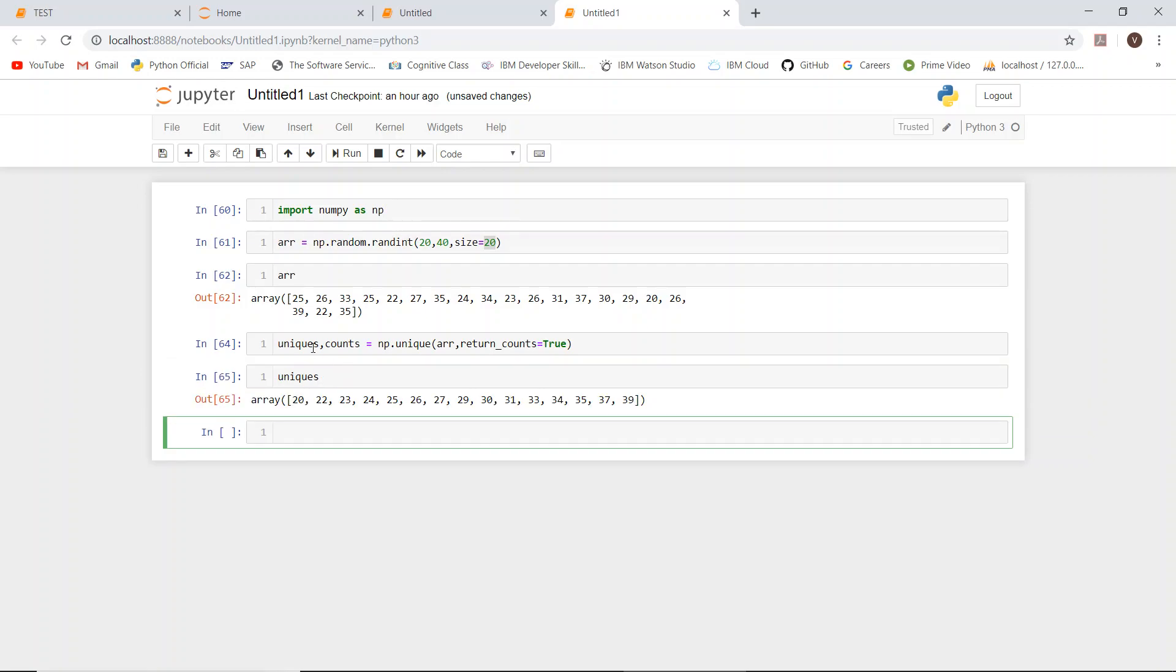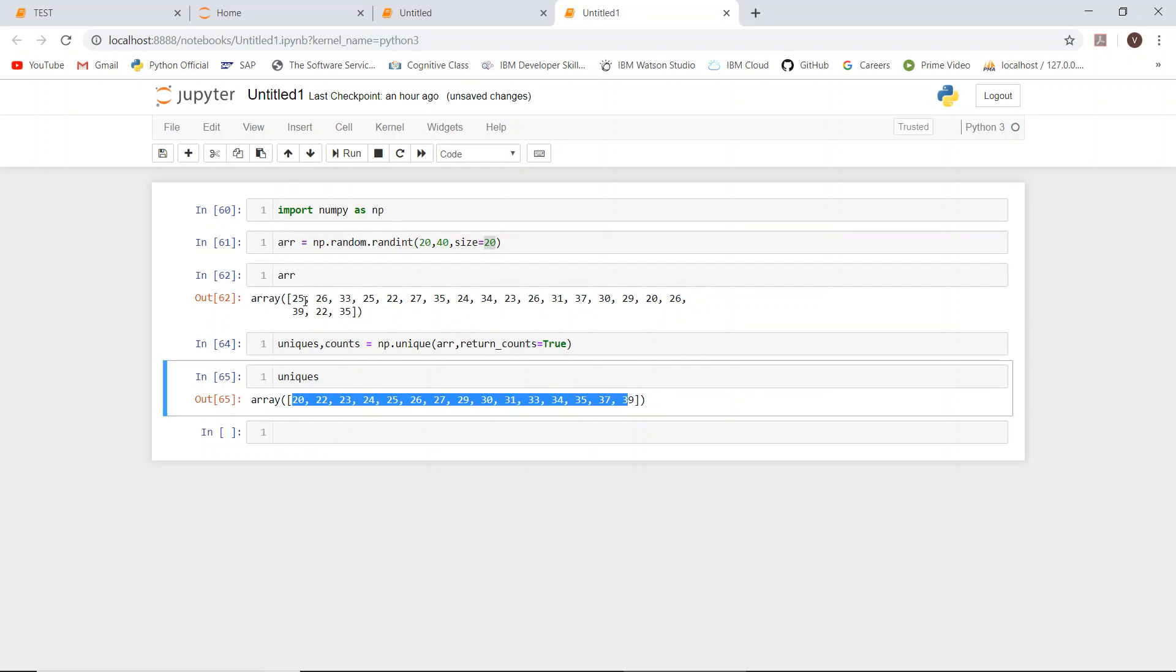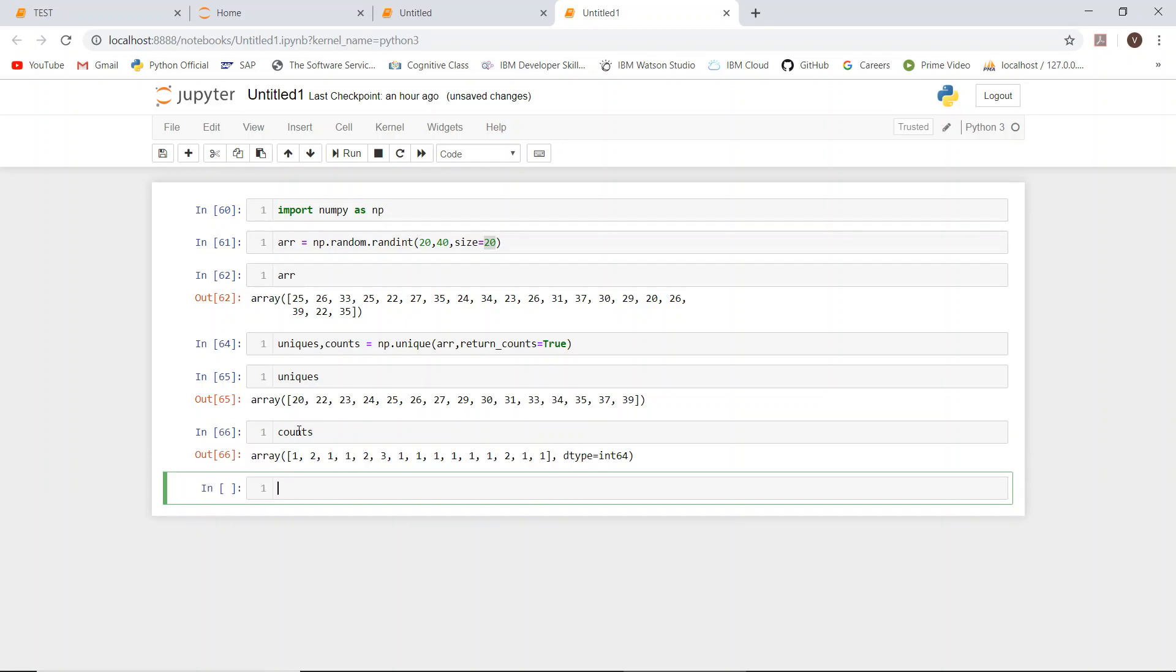This is the variable unique - unique elements in this array. It avoids duplicates. Let's see the counts: 20 appeared only one time, 22 appeared two times. Let's check - 22 one time, next 22, yes, so two times displayed. 23 appeared one time, 24 one time, 25 two times.